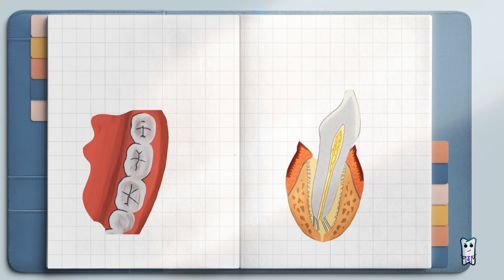During luxation, most of the ligaments along the wall of the alveolus are torn, but the apical ligaments tear to a much lesser degree because the root displacement in the apical zone is minimal. A common mistake I see with students